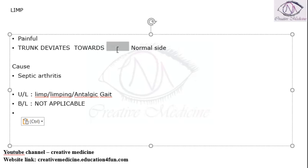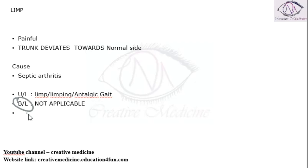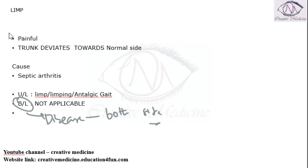Because in the limp the trunk is deviated towards the normal side. If there is disease present bilaterally, that means disease is present on both sides, then the trunk cannot deviate towards the normal side because both sides are diseased.